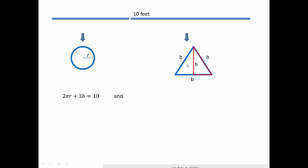There is a right triangle in this picture and the bottom is just half of b. By Pythagorean theorem, you have h² + (b/2)² = b². We solve each for one of the variables. I solved for r here: r = (10 - 3b)/(2π). For h, h = (√3/2)b. I didn't show the algebraic work, but I think we all can do that. Feel free to ask questions on the forum if you have any.